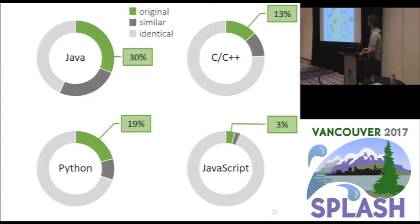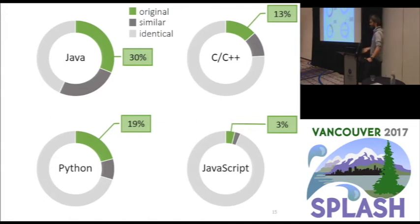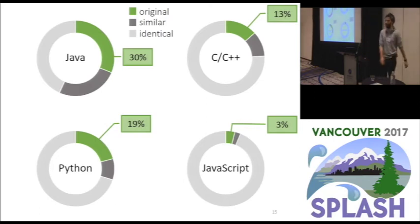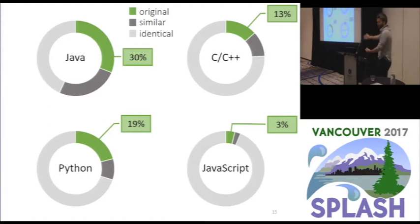C/C++ and Python are roughly similar, with 13% and 19% original files respectively, roughly half being similar files, and the remainder identical. JavaScript is the elephant in the room: 3% original files, slightly above 3% similar, and over 94% of all downloaded JavaScript files were completely identical to the remaining 6%. We all know duplication exists, but honestly, we did not expect it to exist this much.